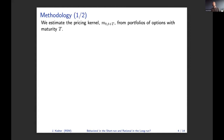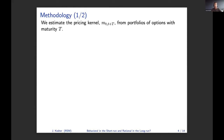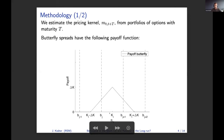We estimate the pricing kernel from a portfolio of options which have a maturity of capital T. These portfolios we're going to use are referred to as butterfly spreads. The payoff of a butterfly spread is represented in the following graph. This is a butterfly spread which has a strike ki and a spread of delta k. As you can see from this graph, if the spread is sufficiently narrow, this butterfly spread identifies the pricing kernel on a narrow interval.